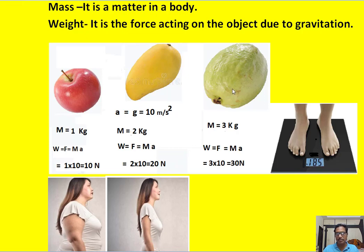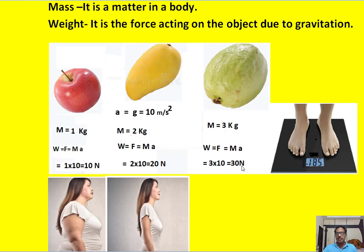When it comes to the cabbage, the mass is 3 kg and the acceleration working on it is 10 meters per second squared. So 3 into 10, we get 30 Newtons. A cabbage whose mass is 3 kg will have a weight of 30 Newtons.